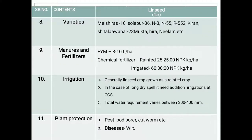The important varieties of linseed crop cultivated in Maharashtra include: Malshira strain, Solar 436, N3, N55, R552, Kiran, Shital, Jawahar 23, Mukta, Hira, Nilam, and others. These are the important and mostly cultivated varieties in Maharashtra.